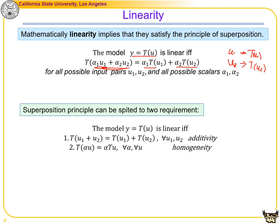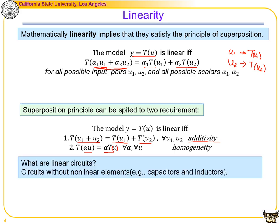Superposition can be split into two requirements. The first is additivity: the summation of two inputs results in the summation of the two outputs. The second is homogeneity: a scaled input results in the same scaled output — T of alpha·u equals alpha·T(u). Circuits without non-linear elements are called linear circuits.